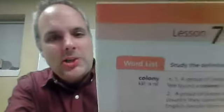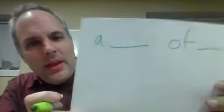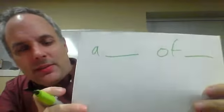Now that you can say these words, let's talk about how to use them. The first one is colony. In English, we have a lot of words that can fit into this pattern: 'a something of something.'